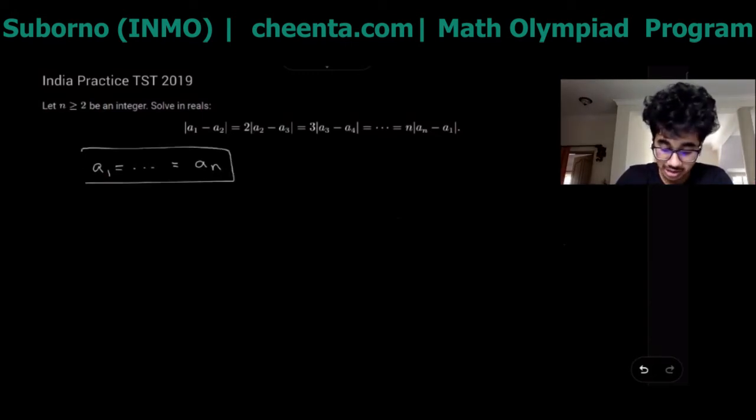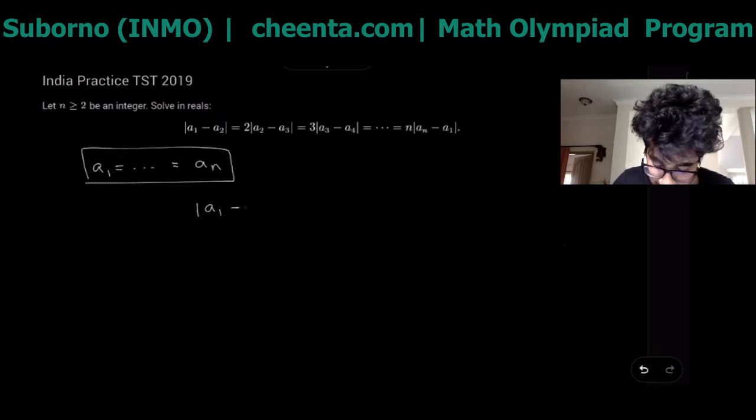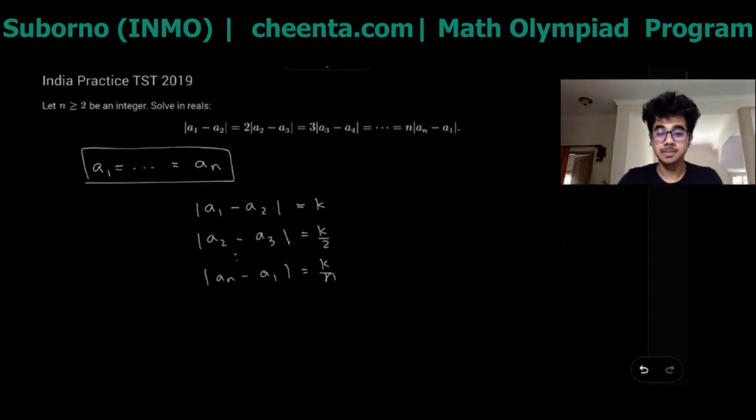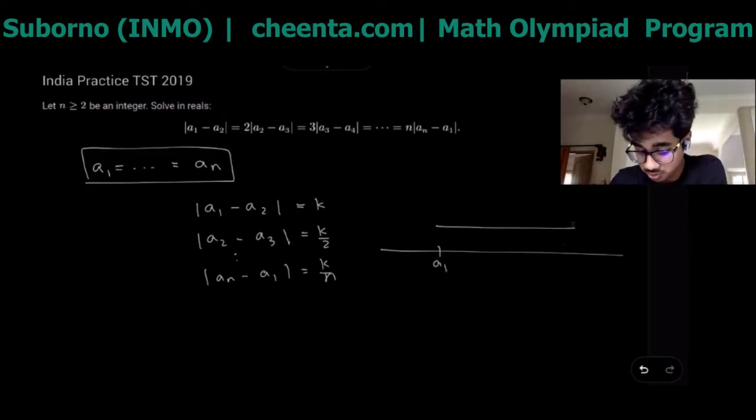So this is one solution we have. Let's assume that not all the values are equal and let's just say that a1 minus a2 is some k. This would mean that a2 minus a3 is k over 2 and so on, that an minus a1 would become k over n.